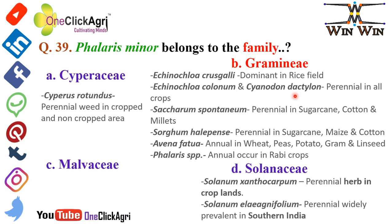Question number 39: Phalaris minor belongs to the Gramineae family, also known as the Poaceae family. Other weeds in Gramineae: Echinochloa crusgalli is dominant in rice fields; Echinochloa colonum; Cynodon dactylon is a perennial weed in all crops; Saccharum spontaneum is perennial in sugarcane, cotton, and millets; Sorghum halepense is perennial in sugarcane, maize, and cotton; Avena fatua is annual in wheat, pea, potato, gram, and linseed; and Phalaris minor is an annual in rabi crops.